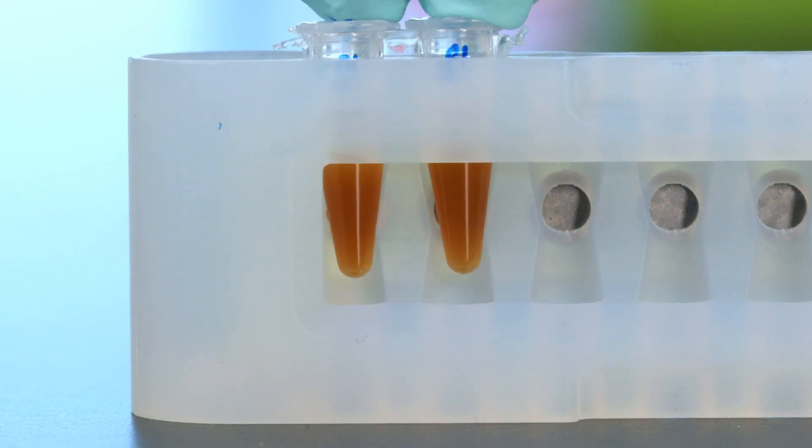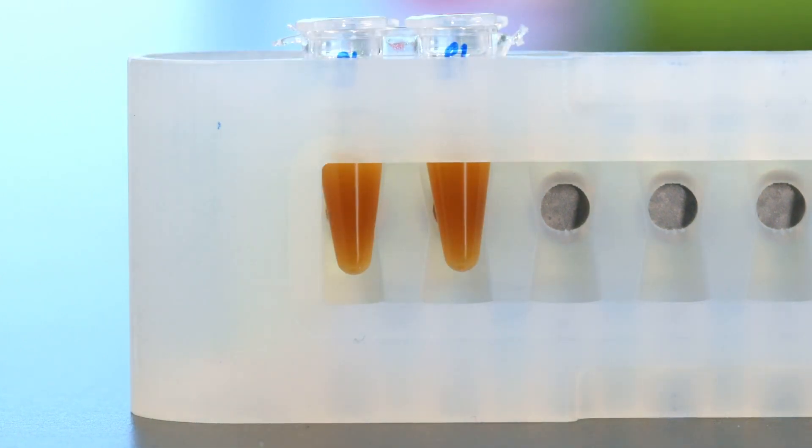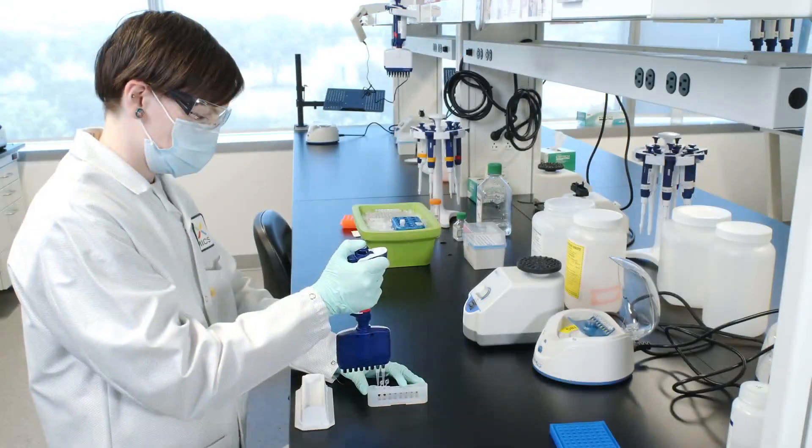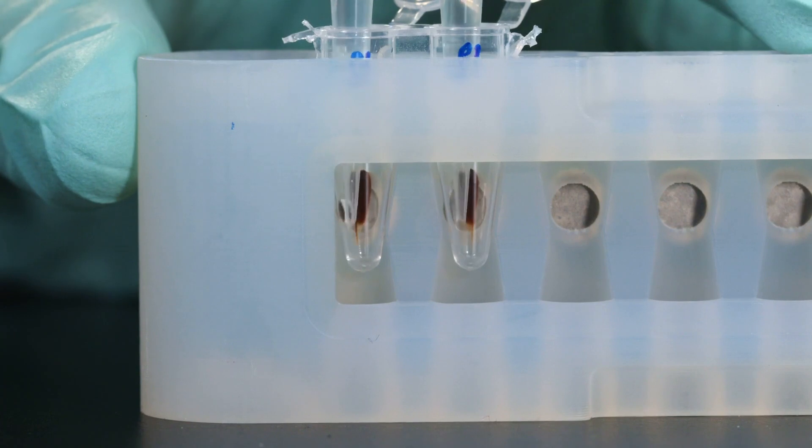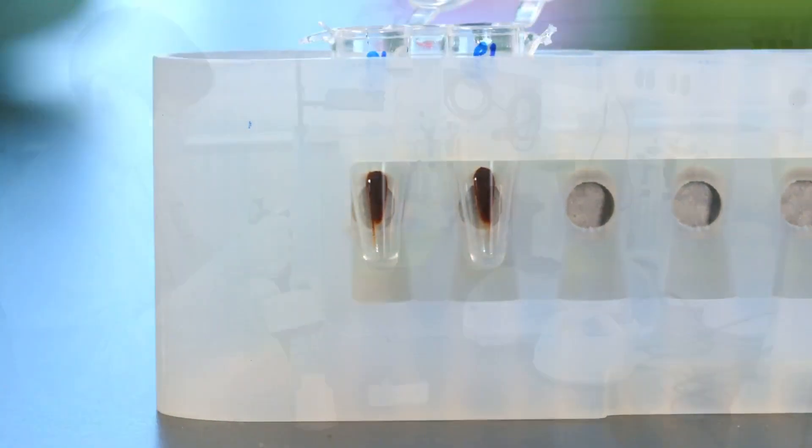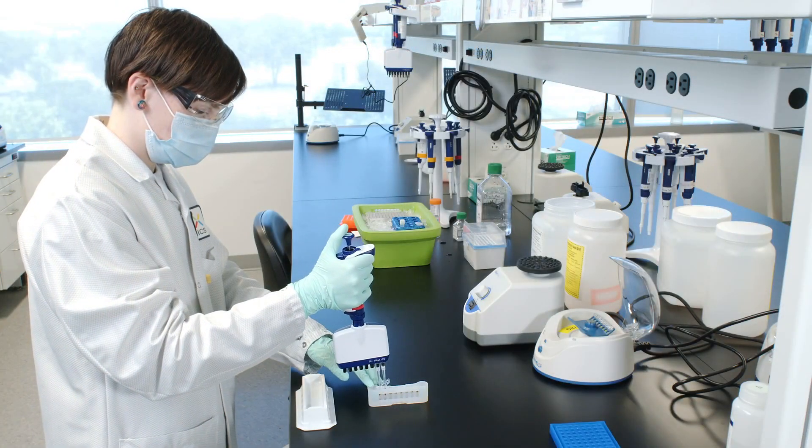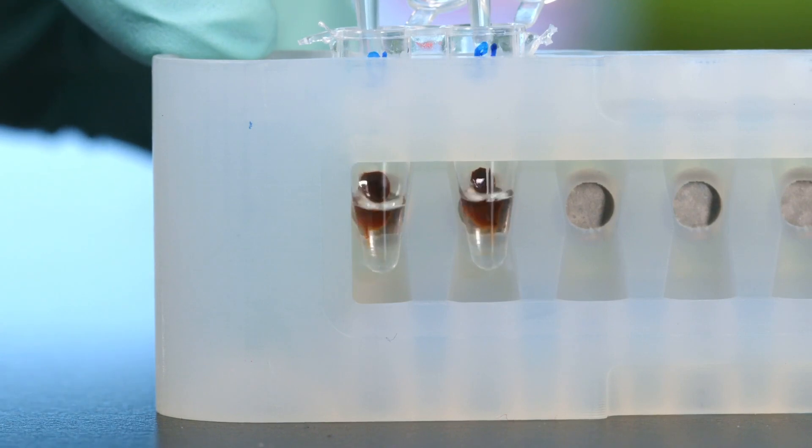Remove the supernatant. Add 200 microliters of 80% ethanol to the pellet.